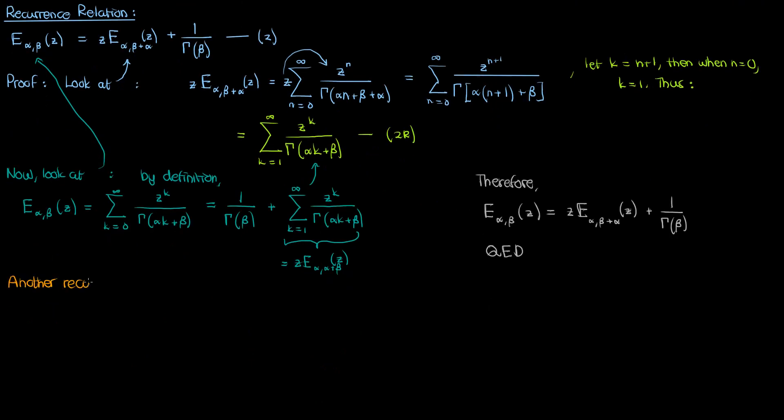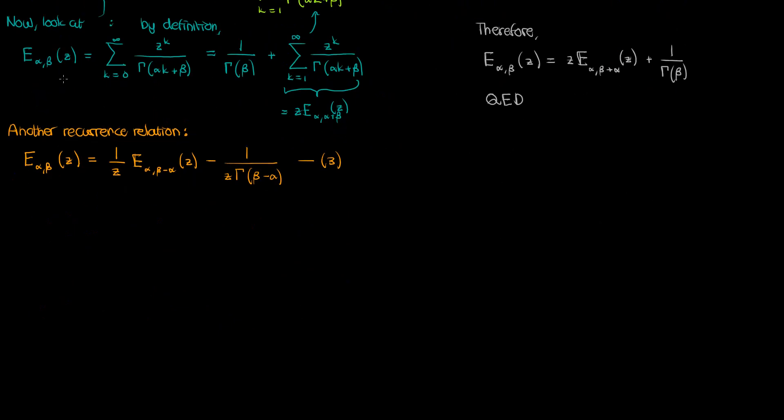Now there is also a subtraction version of the Mittag-Leffler function recurrence relation, which is given by the following, which I'll call equation 3, and this is the recurrence relation that shows up on the Wikipedia page. You can actually prove this recurrence relation with very similar techniques as what you used to prove equation 2, but I won't do that here, and instead I'll just leave it to you as an exercise.